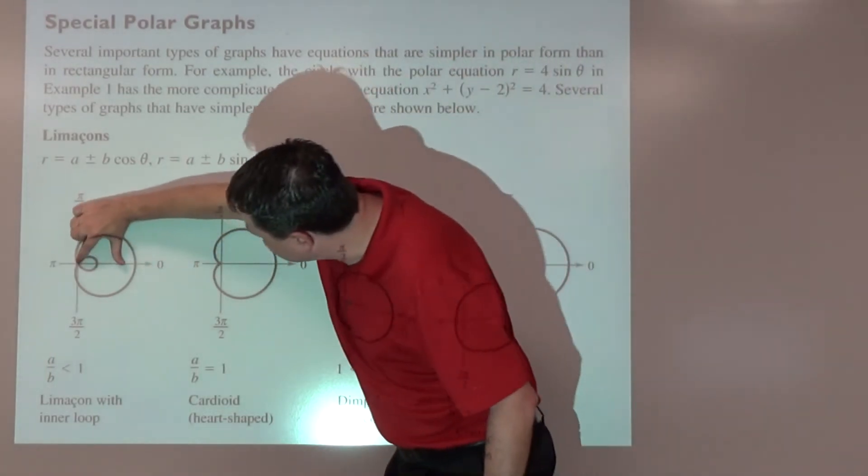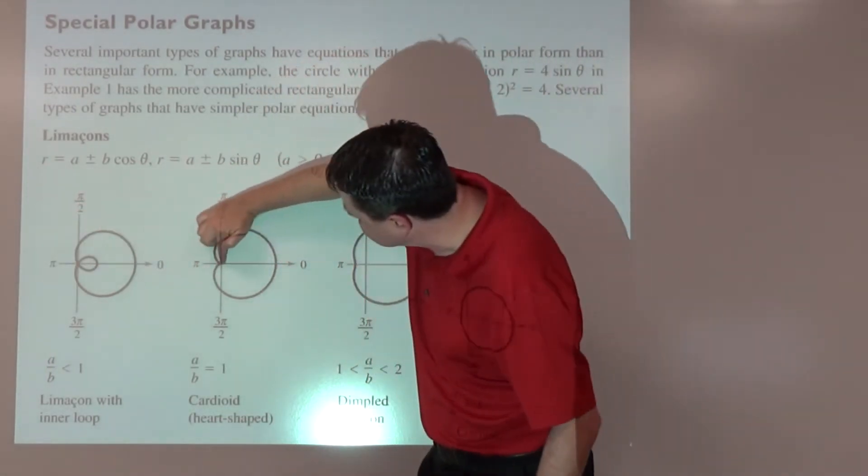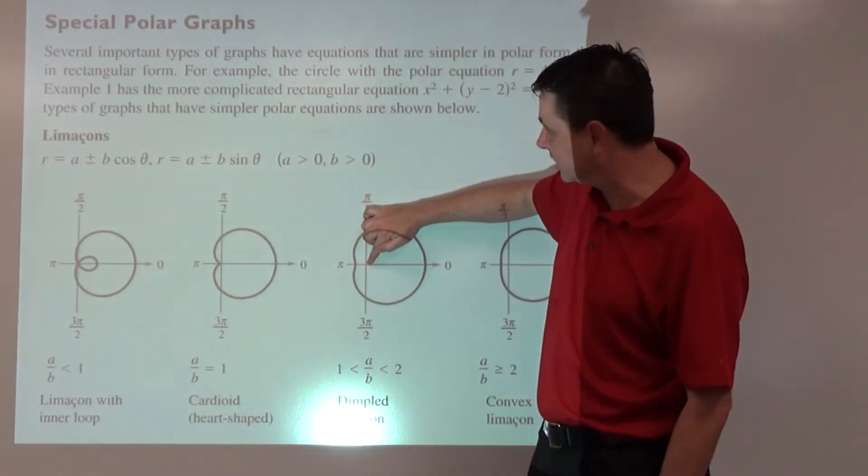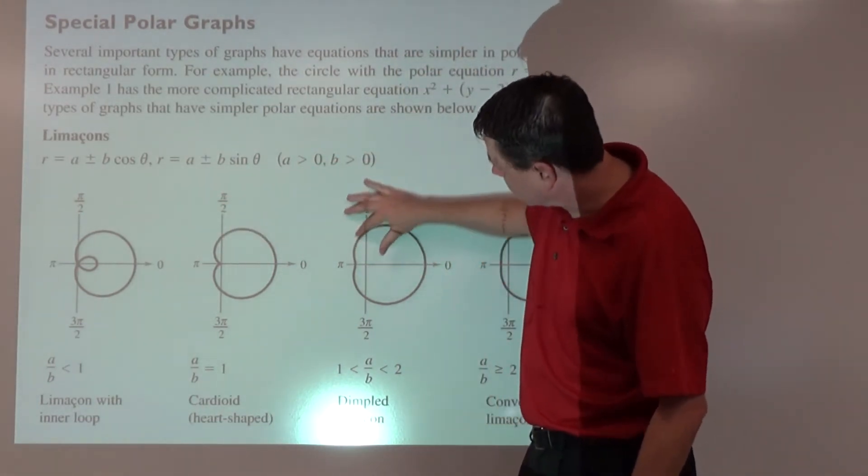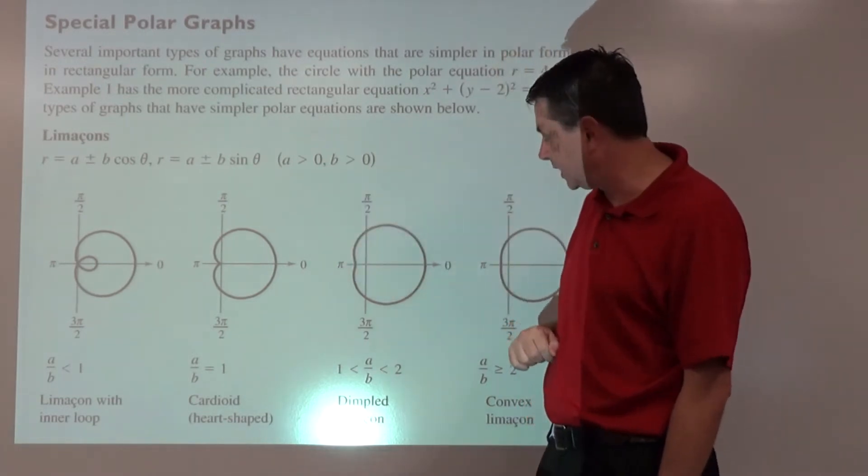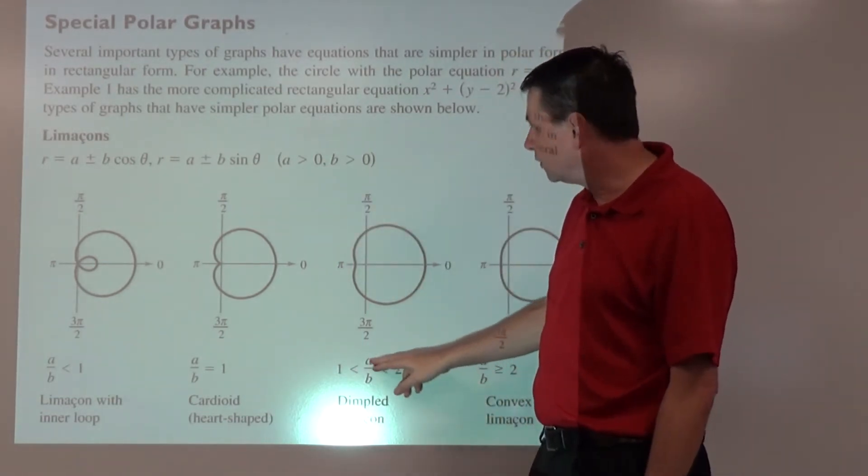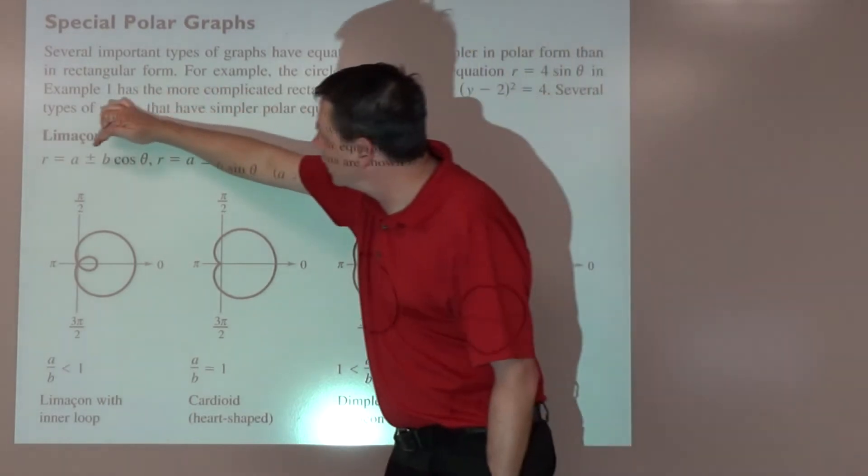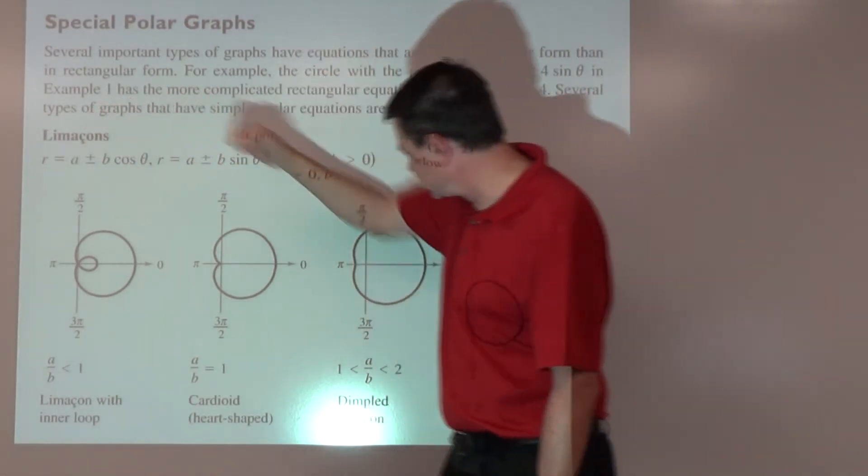If the a over b is between 1 and 2, we get a dimpled limaçon. Notice what's happening here: it passes through the origin in one case, hits the origin, does not in this case. It's almost circular with one part just pushed in a little bit. That would be something like 4 plus 3 cosine theta, where 4 over 3 fits between 1 and 2.